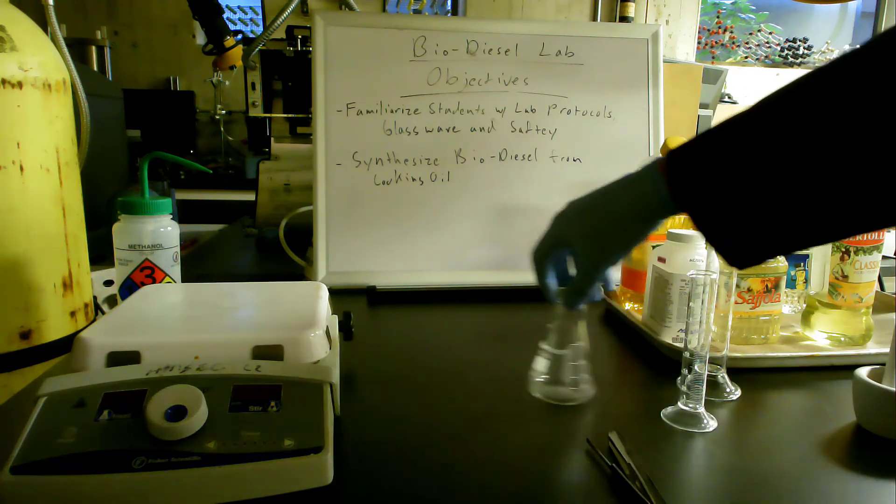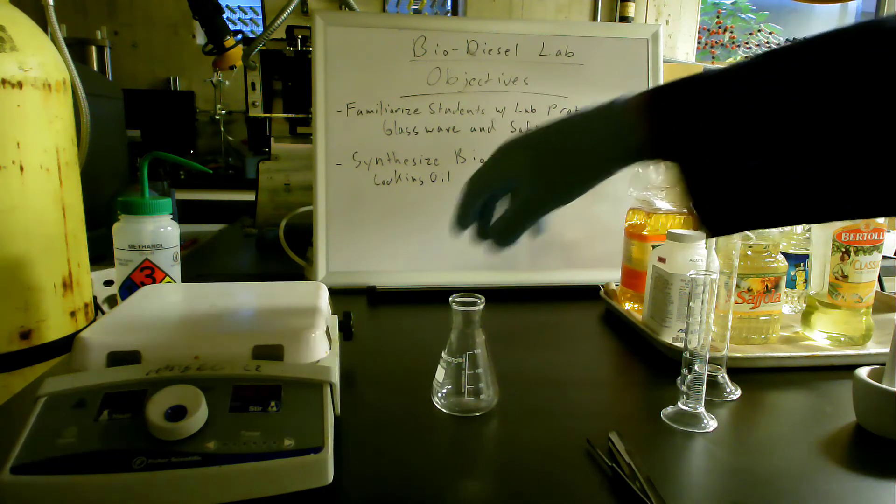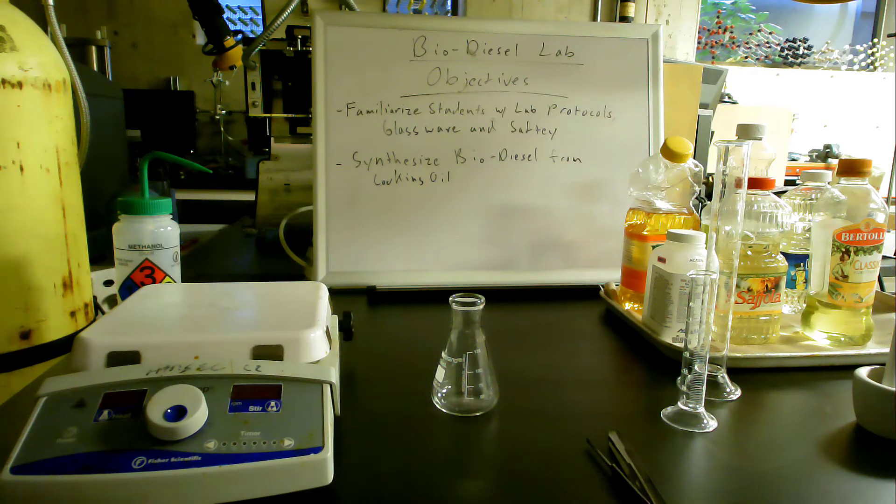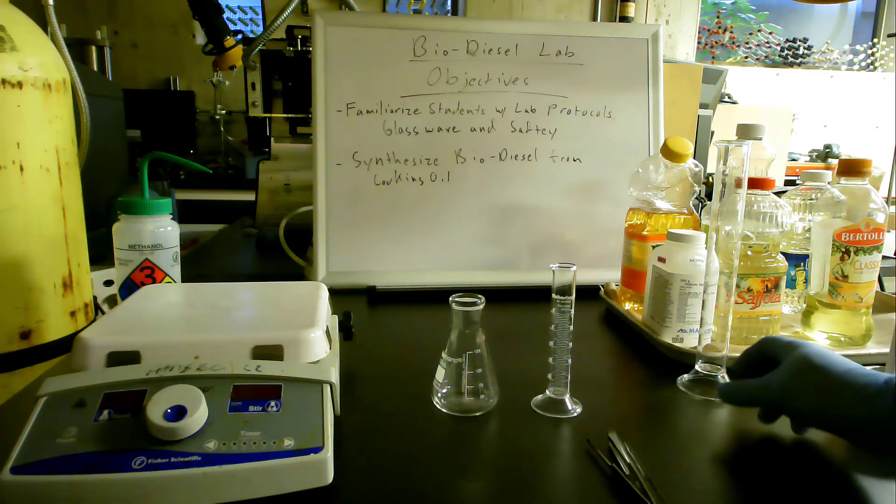We have an Erlenmeyer flask which is the cone-shaped flask. It's good for preventing evaporation of volatile material, volatile liquids.